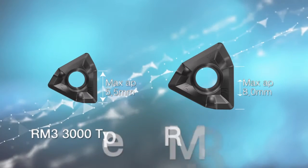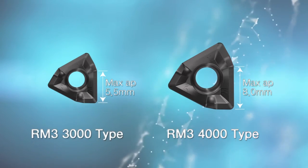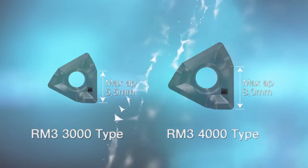RM3 3000 type and RM3P 4000 are two different size options available for RM.